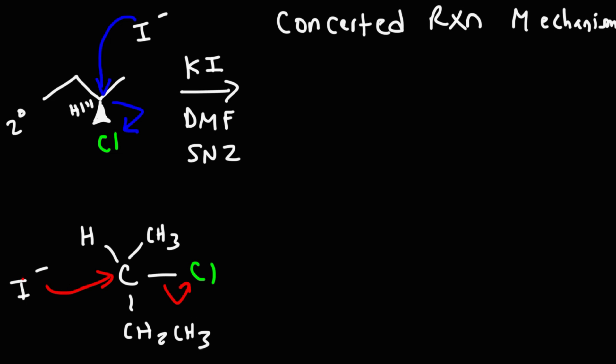Here iodide is coming in from this side. As iodide approaches the carbon, it begins to form a bond. While that's happening, the bond between carbon and chlorine is breaking apart. So this bond is forming at the same time this bond is breaking. That is a concerted reaction mechanism, where all bond breaking and bond formation processes occur simultaneously.